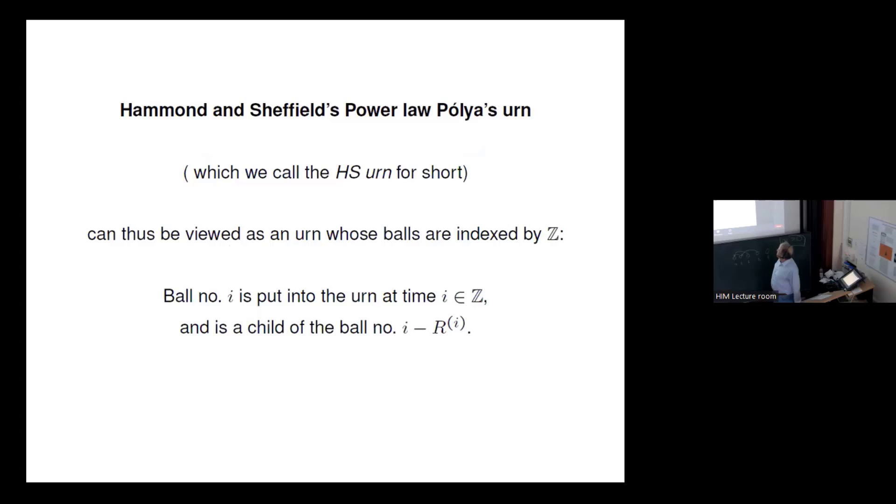Now you see immediately a problem here because when we have a homogeneous drawing situation, it's not that the law of drawing the balls becomes flatter and flatter which is uniform from all of those that are in the urn. But here we have always this time horizon R which stays in distribution the same.